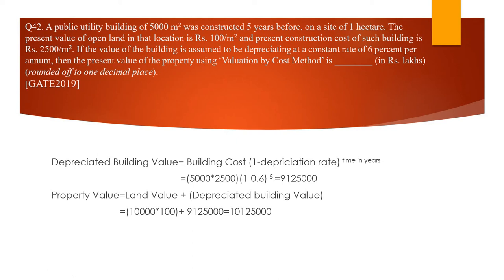The next question is from GATE 2019. A public utility building of 5,000 square meters was constructed five years ago on a site of one hectare. The present value of open land is ₹100 per square meter and the present cost of construction is ₹2,500 per square meter. The building depreciates at 6% per annum. We need to find the present value of the property using the valuation cost method, which includes land value plus the depreciated building value.